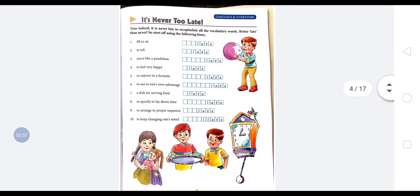It is 'It's Never Too Late' - it is never late to recapitulate all the vocabulary words. Better late than never, yes. Hum late ho jahe koi baat nahi. Isse achha ki hum kabhi karaye hi nahi woh cheez, kabhi wohan pohunche hi nahi. To start karenge toh pohunch bhi jaheenge.